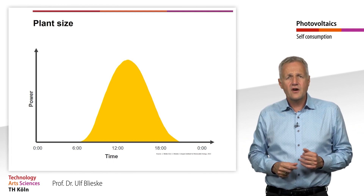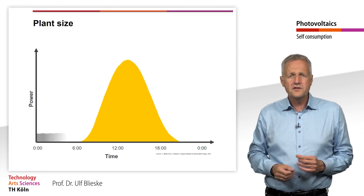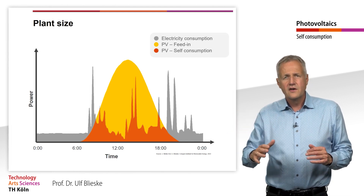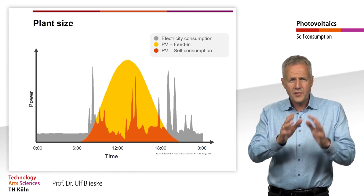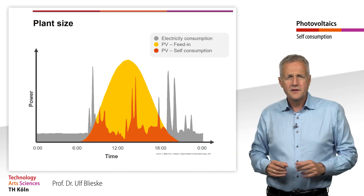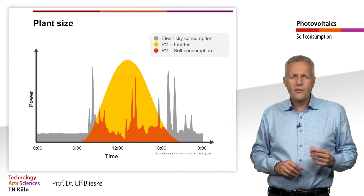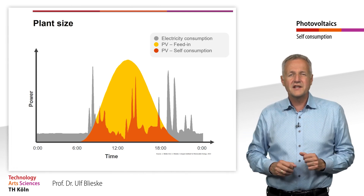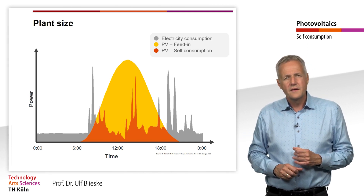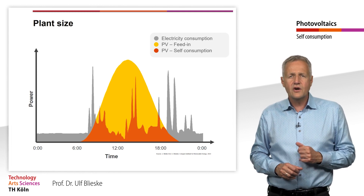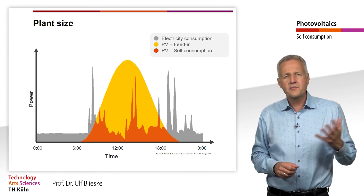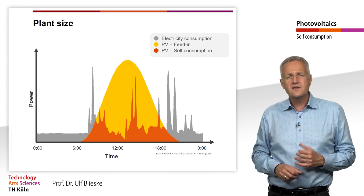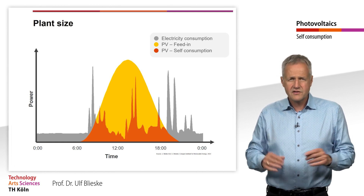The electricity consumption of the household, on the other hand, is distributed throughout the day, with clear peaks in the morning, midday and evening hours. The self-consumed solar power is marked in orange, while the surplus part of the solar energy is marked in yellow. This figure clearly shows that the self-consumption rate depends crucially on the ratio of the system output and the electricity consumption.